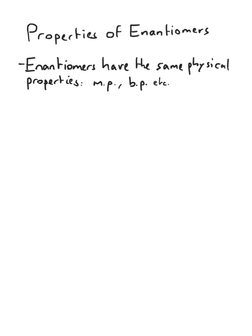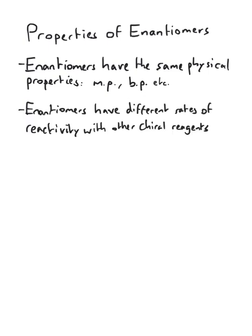However, the chemical properties are different. The most significant difference between enantiomers is that they have different rates of reactivity with other chiral reagents. This is not limited to a reaction vessel. This actually happens in our bodies too.